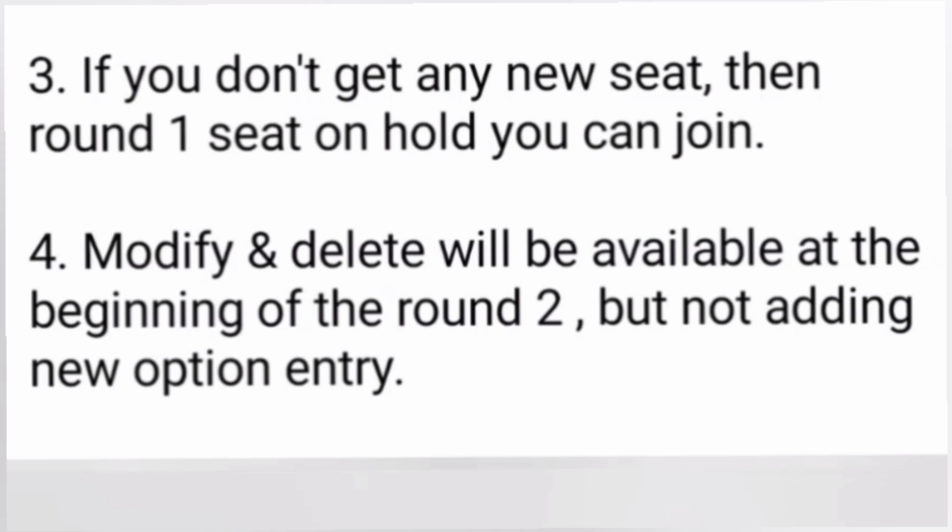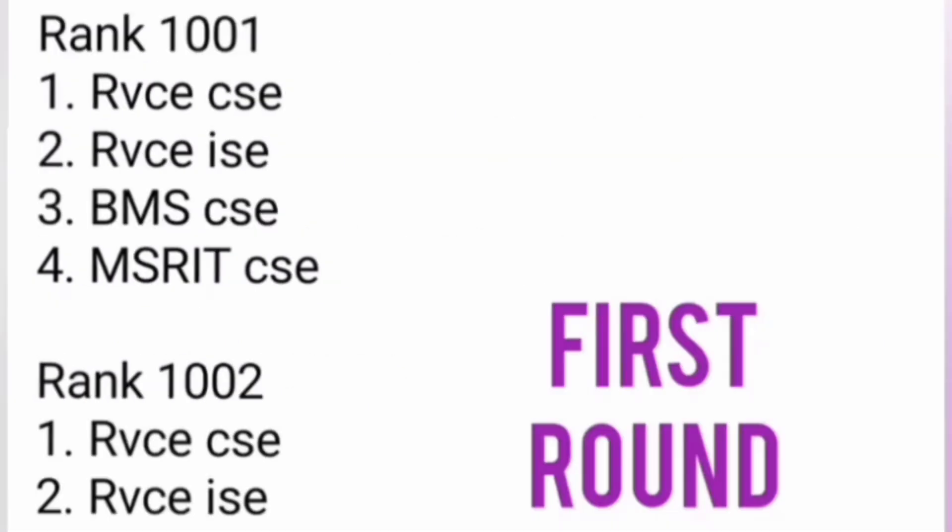Fourth tip: modify and delete options will be available in round two, but most KCET counseling sites do not allow you to add new colleges in round two. So it is very important that you add all possible college-course combinations in round one itself. There is no limitation — you can add up to 1,000 entries. List from the top college to the last, but only include combinations you are genuinely willing to join.